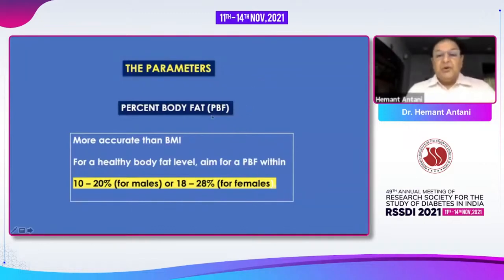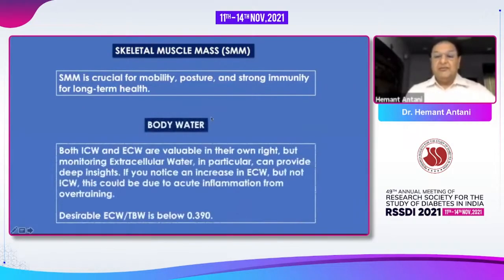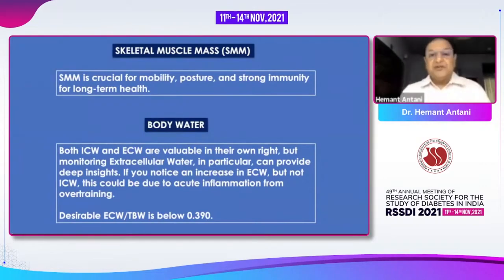The most important parameter is percentage body fat, which is more accurate than BMI. The normal levels are 10 to 20% for males and 18 to 28% for females — these should be the guidelines when taking care of your patient. Another important parameter is skeletal muscle mass, which is crucial for mobility, posture and strong immunity for long-term health. Body water is either intracellular or extracellular; monitoring extracellular water in particular can provide deep insights. An increase in extracellular water but not intracellular water could be due to acute inflammation from overtraining. The desirable extracellular water to total body water ratio should be less than 0.339.